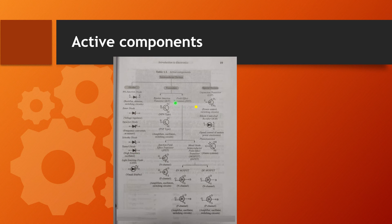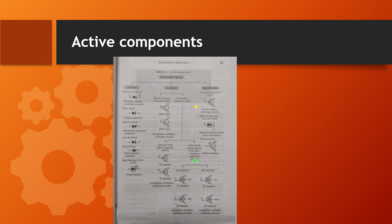Next, transistors as active components: Bipolar Junction Transistors (BJT) include PNP and NPN types. Field Effect Transistors (FET) include J-FET and MOSFET. MOSFET types include N-channel and P-channel, as well as enhancement MOSFET and depletion MOSFET in both P-channel and N-channel variants.